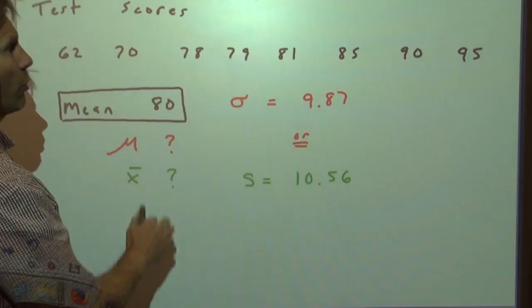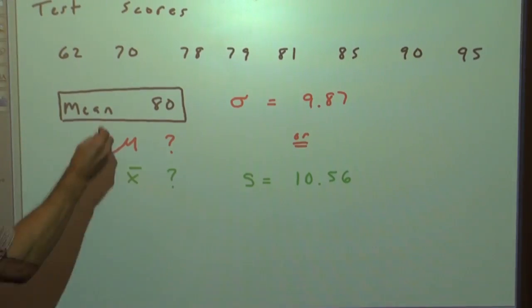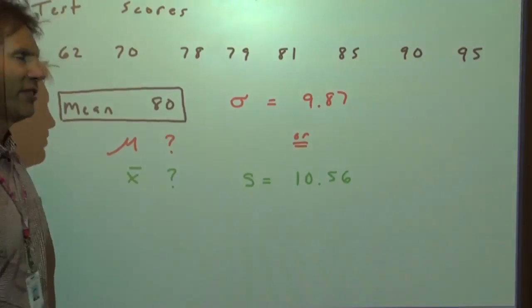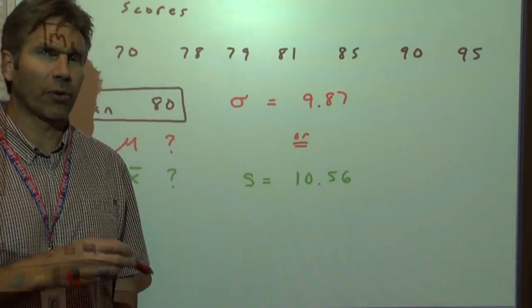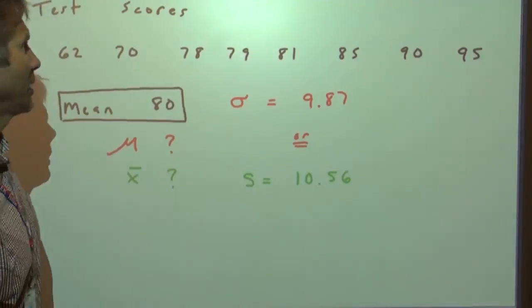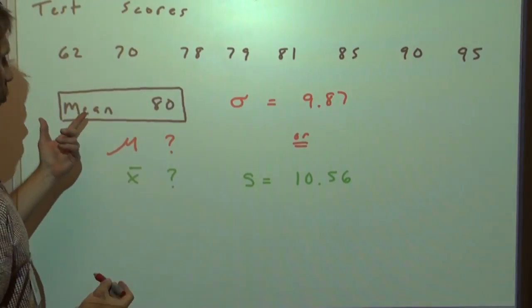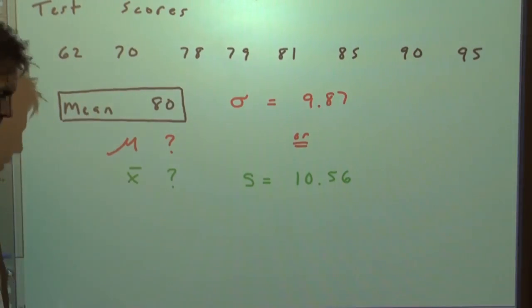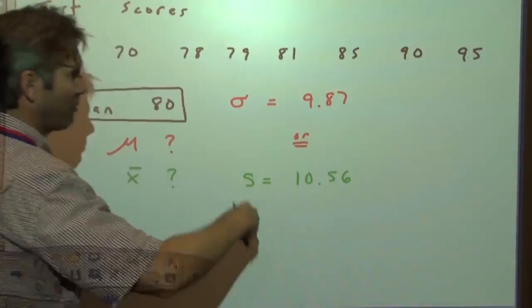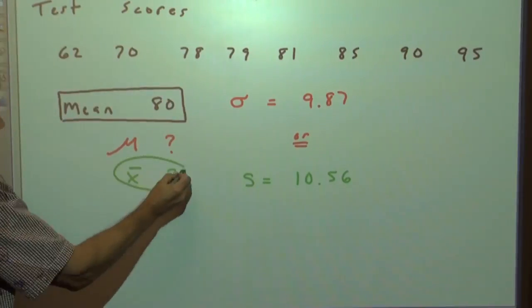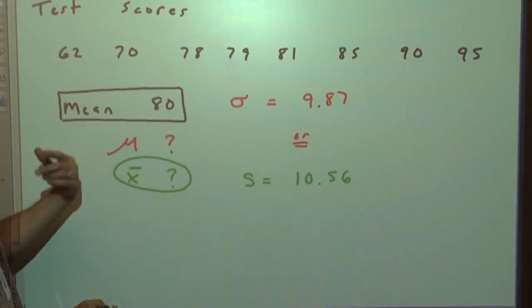Right here, we have test scores from a class. Okay, so there's eight scores here. Is this a whole population or is it a sample? Well, it's probably a sample. So if it's a sample, then the mean would be what, mu or x bar? Well, if it's just a sample from a bigger population, this is x bar. Our sample mean is 80.